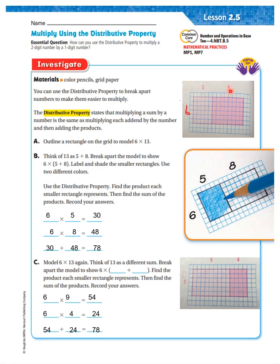5 plus 8 is 13, and we're looking to find the product of 6 times 13. Now I can say 6 times 5 is 30, 6 times 8 is 48. 30 plus 48 is 78. That is how you use the distributive property to multiply.